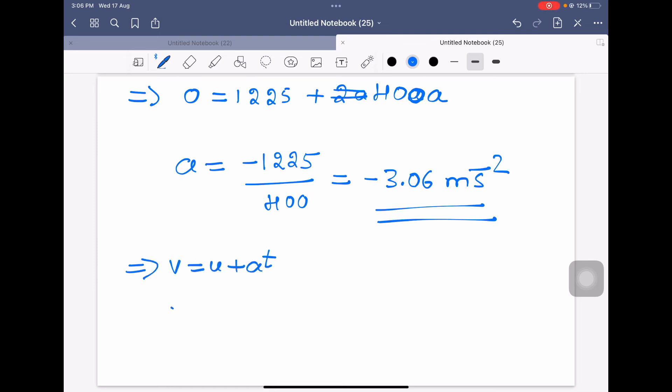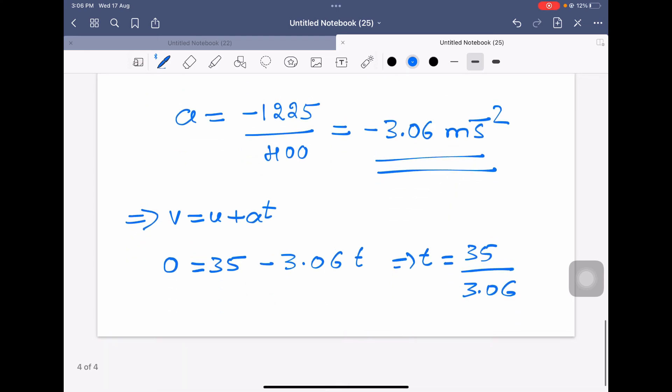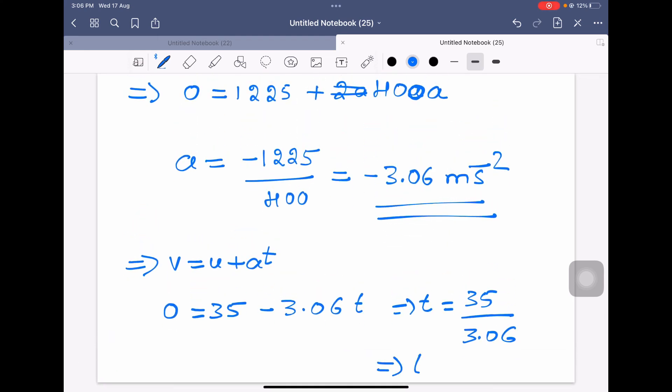Final velocity is 0, initial velocity is 35 plus acceleration is minus 3.06 into t. So t equals 35 divided by 3.06, which is roughly equal to 11.4. t equals 11.4 seconds.